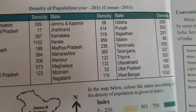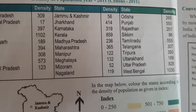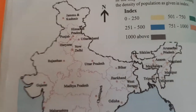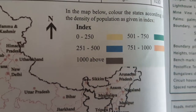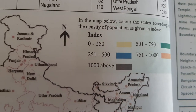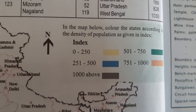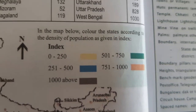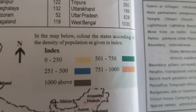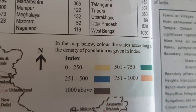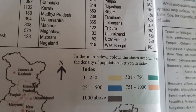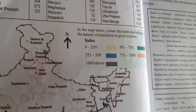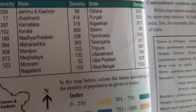Next, coming to the lowest density. The lowest density is Arunachal Pradesh, that is 17. Here you can see that 0 to 250 is the yellow shade, 251 to 500 is blue shade, 501 to 750 is a green shade, 751 to 1000 is an orange shade, and 1000 above is a brown shade. In the map, color the states according to the density of population as given in the index. By seeing the above table we should do this work.